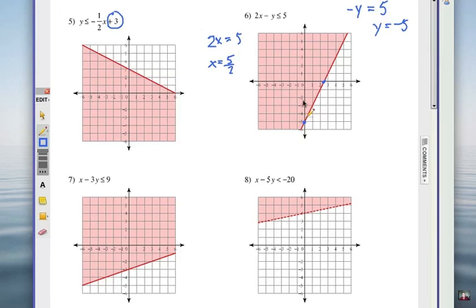Now when I substitute in a test point, for example the origin, that's going to be 0, 0. So 2 times 0 minus 0. That whole thing is 0. Is 0 less than or equal to 5? Yes, that is true. So shade that point and everything on that side of the line.